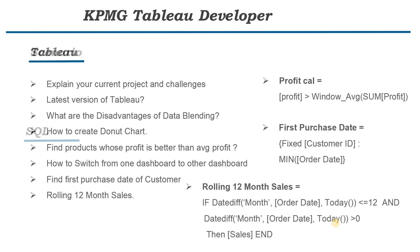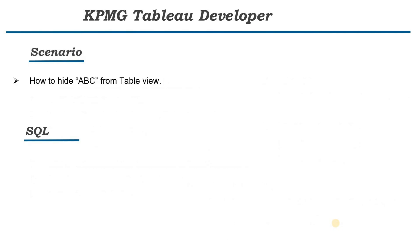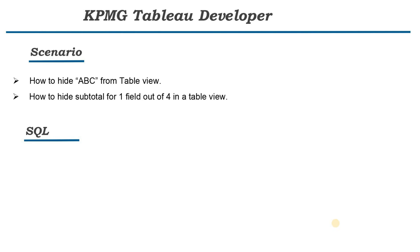Now let's move to the scenario-based questions. The first scenario question was: whenever we add a string value or a dimension into the view, it shows ABC in front of it — how can we hide that ABC from the table view? I've already explained this in my scenario-based question video; I will provide the link in the description box. The second scenario question is: how to hide the subtotal for one field out of four in a table. For example, we have four measures — Sales, Profit, Discount, and Ratio — and we want to hide the total only for Ratio and show it for the other three. This is also explained in my Tableau scenario-based question series; link will be in the description.